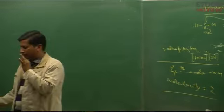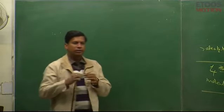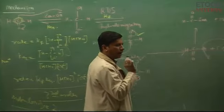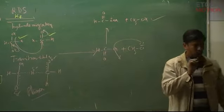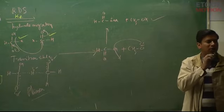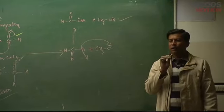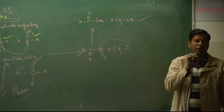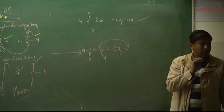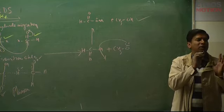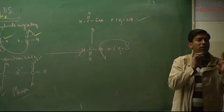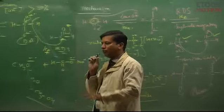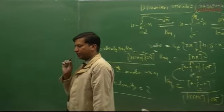Mechanism-related summary points: Hydride transfer is the RDS. Cannizzaro is a disproportionation reaction — both acid and alcohol are formed. Only aldehydes without alpha-H undergo this reaction. Normal concentration 50-60% gives third-order reaction. Greater than 80% concentration gives Dianion mechanism — fourth-order reaction.